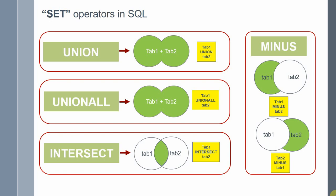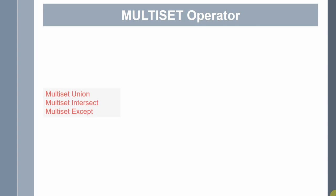Very similar to this, we have multiset operators. There are three multiset operators: multiset union, multiset intersect, and multiset except. Multiset union will combine the elements of two collections of the same type. This is very important — all these set operators will work on collections of the same type. Multiset intersect will return the common elements between two collections and returns them as a collection of the same type. And multiset except will return the elements from one collection which is not present in another collection.